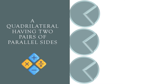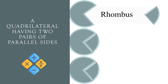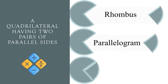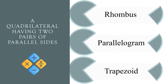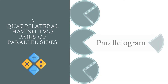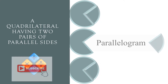A quadrilateral having two pairs of parallel sides. Rhombus, parallelogram, or trapezoid? The correct answer is parallelogram.